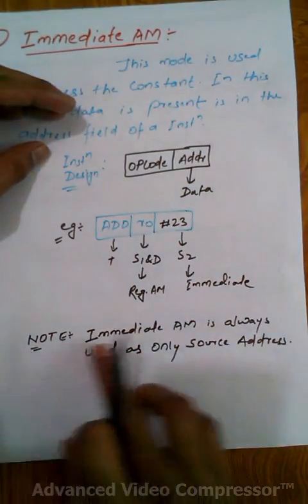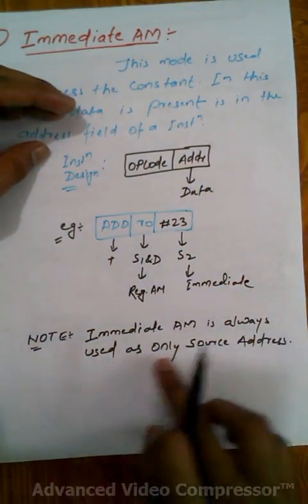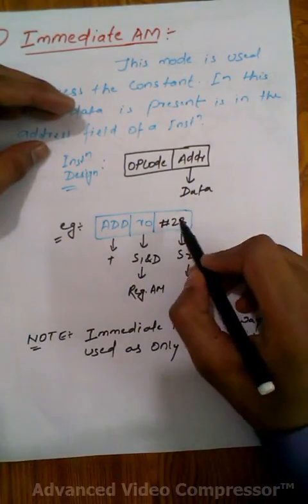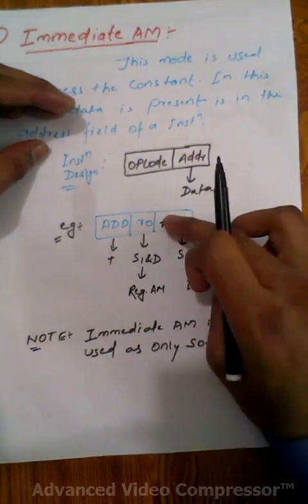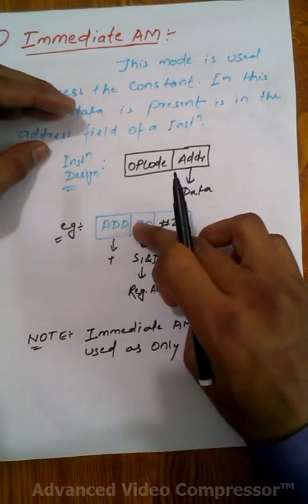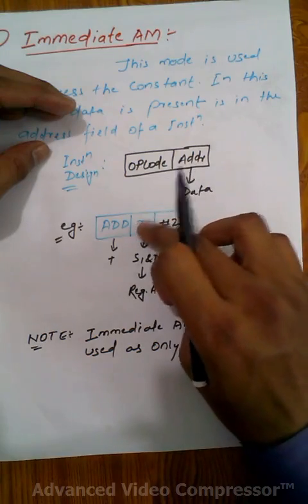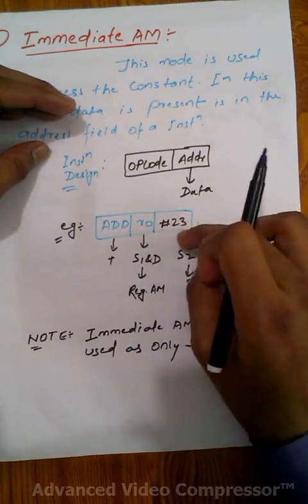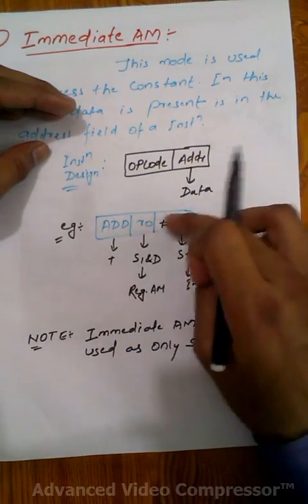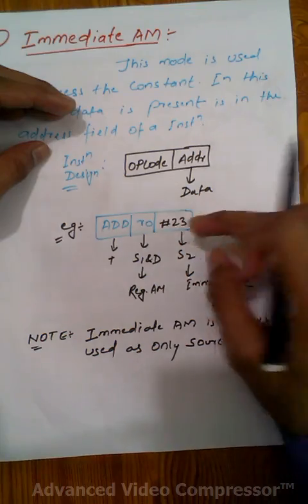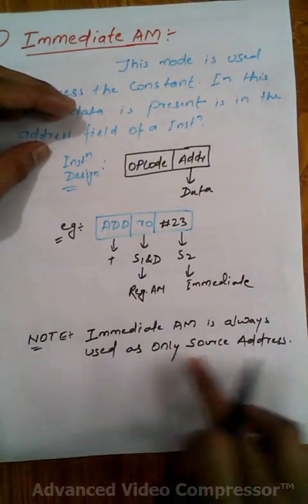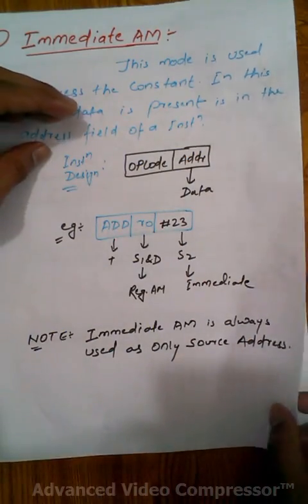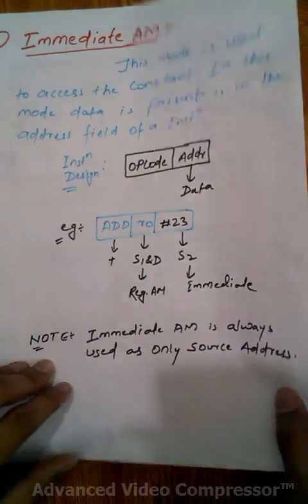One important point: immediate addressing mode can only be used as a source address, not as a destination address. For example, #23 can only be a source. If you try to use 23 as a destination, there is nowhere to store the result because 23 is just data, not a memory address. This is also a good MCQ question.